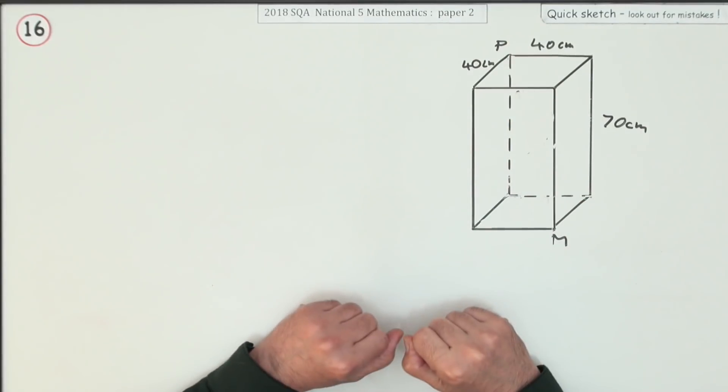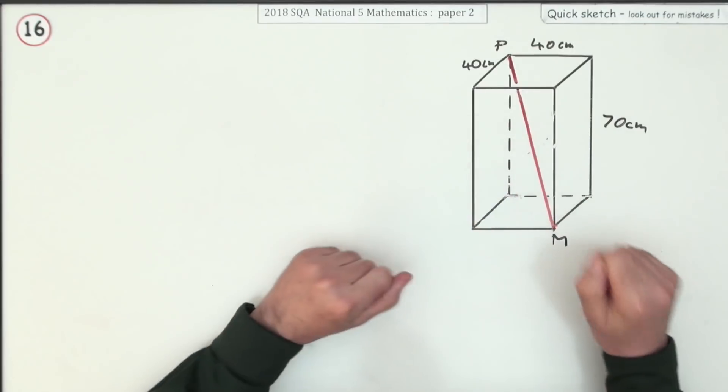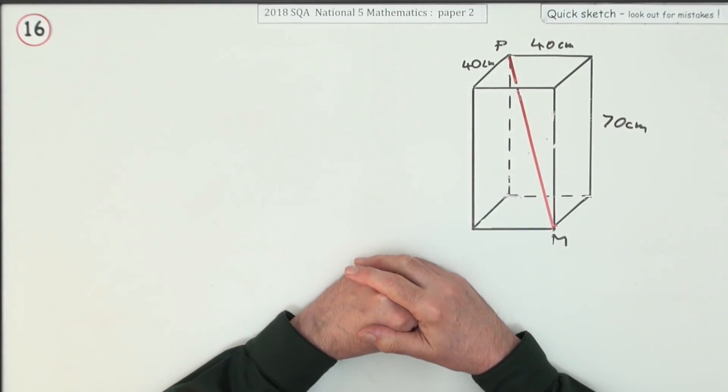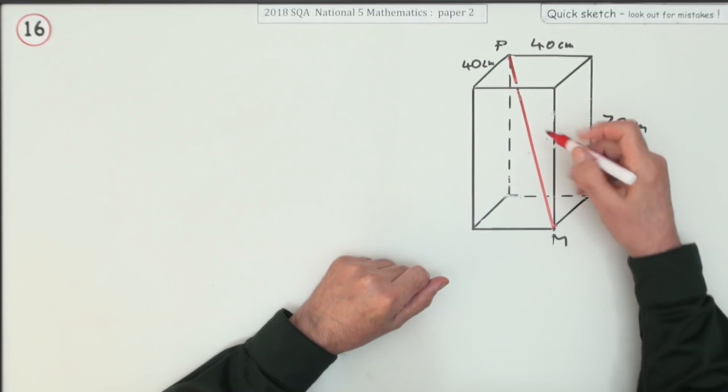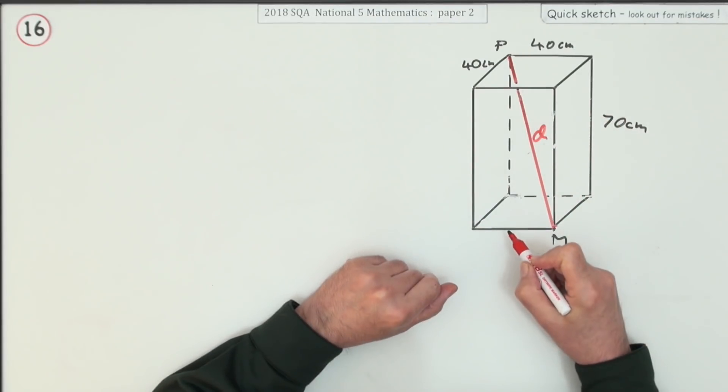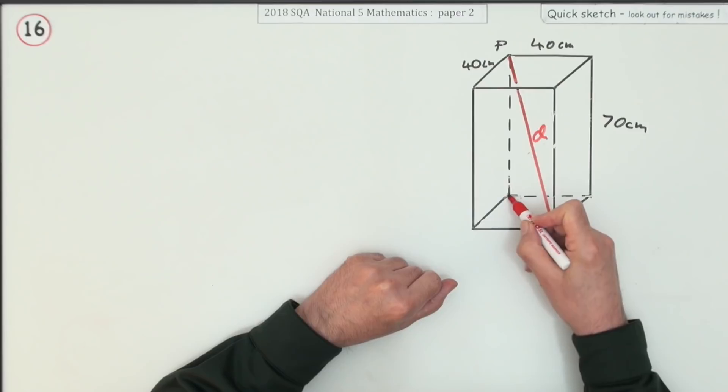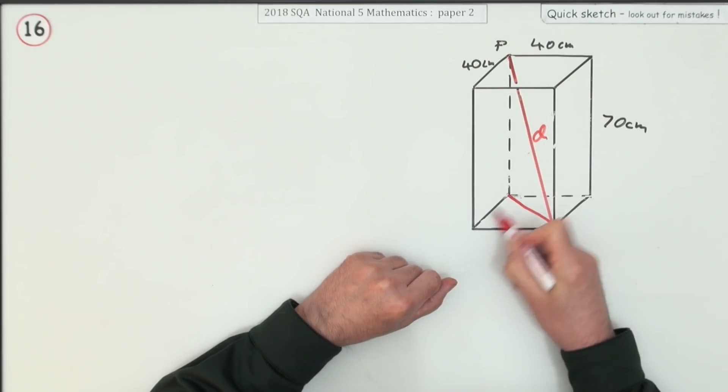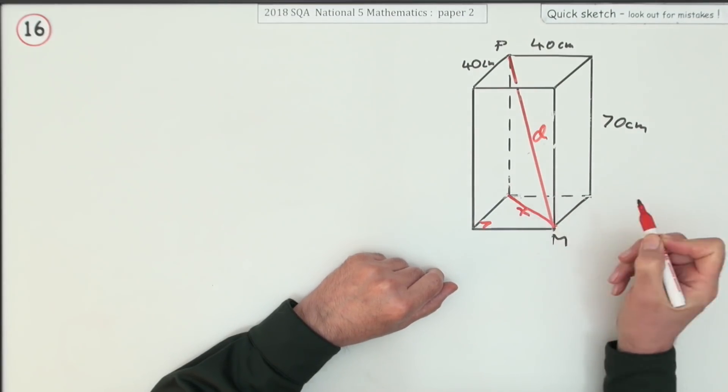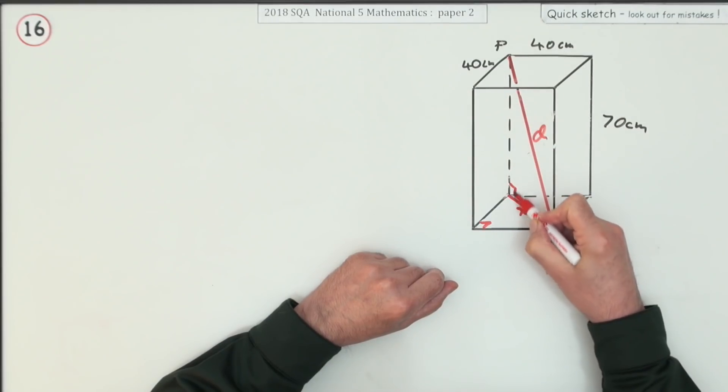Well, I'll need to know how far it is from corner P to corner M, so I'll need this line—this space diagonal here. How do we work out its length? If I call that d, there's two ways: I could work out the diagonal on the base because you've got a right-angle triangle here. I could call that x and then work out d from the vertical right-angle triangle.